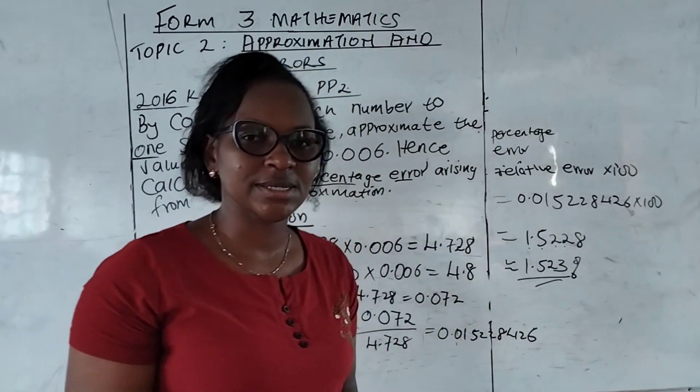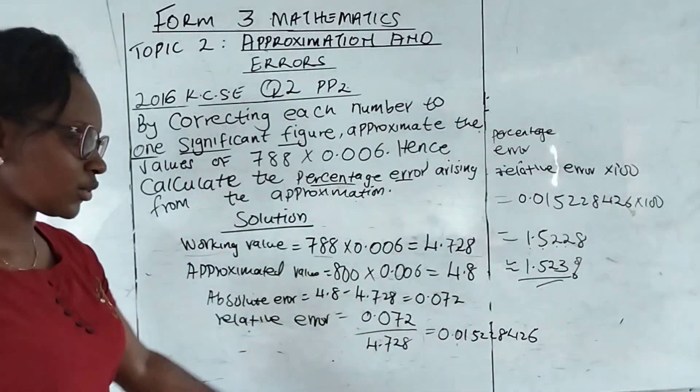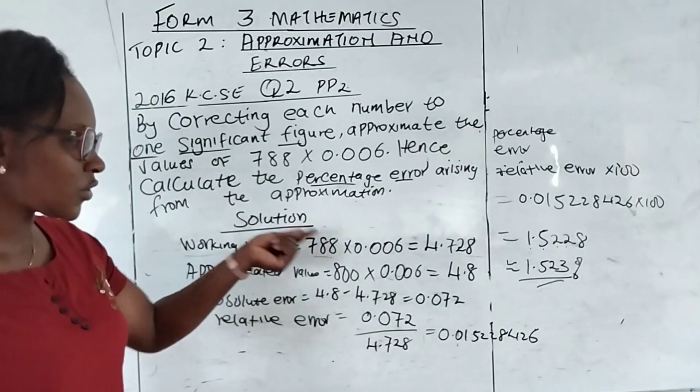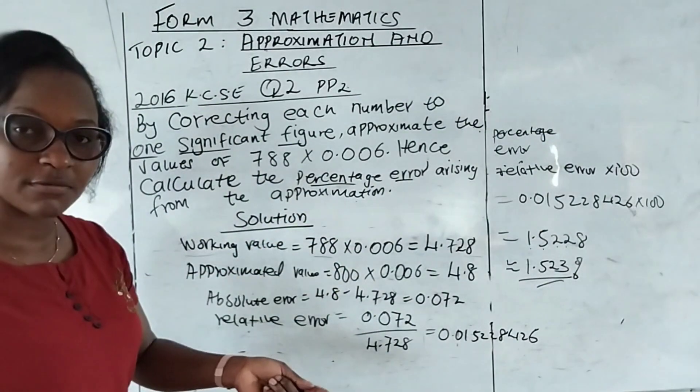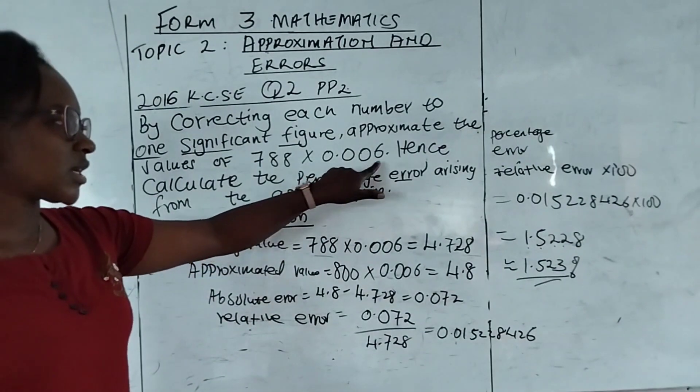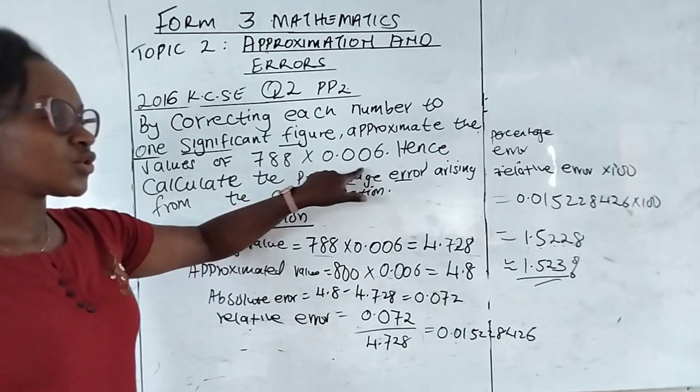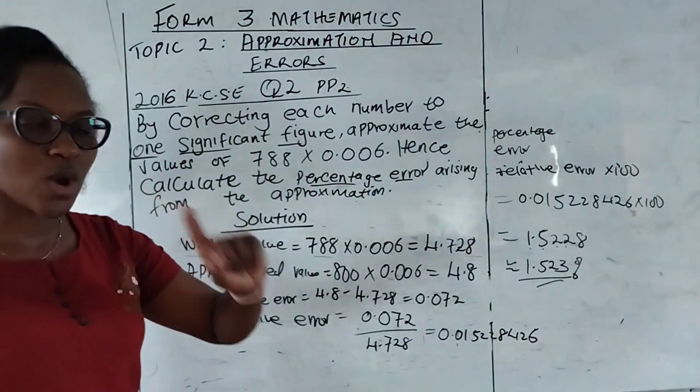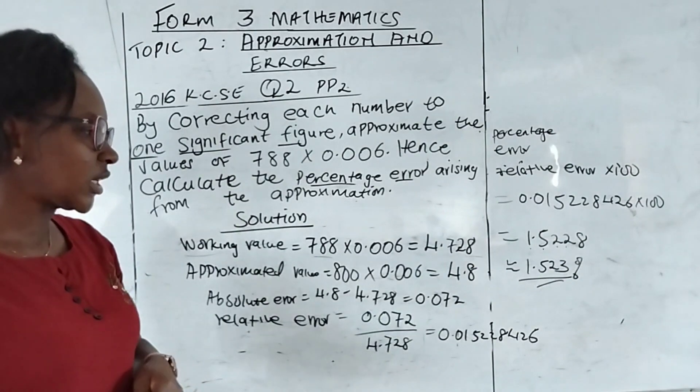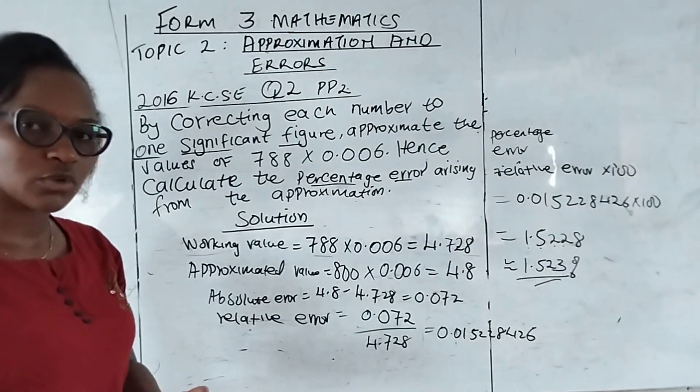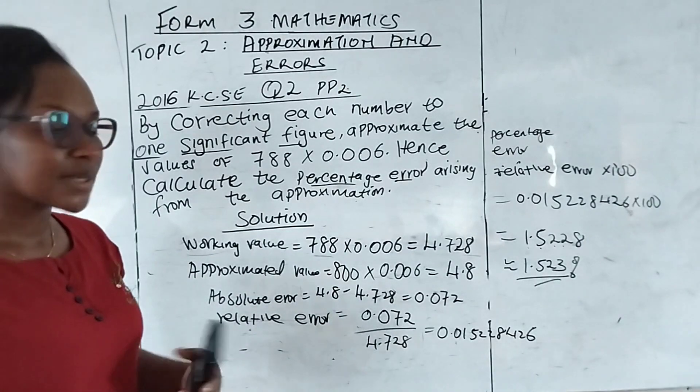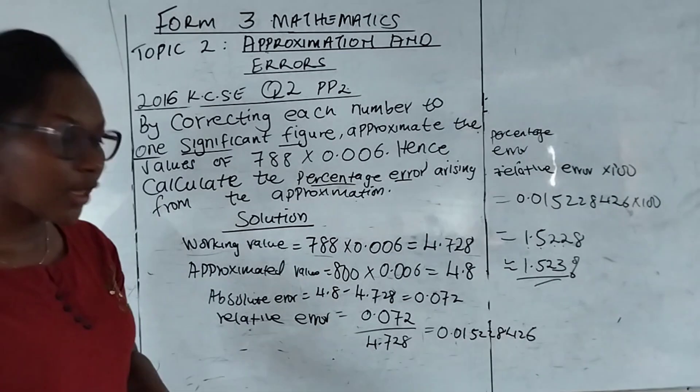I hope you have followed how to get this kind of example that we have. I know the most confusing part maybe for most students was how to convert 0.006 to 1 significant figure. But I hope now it is very clear with you. Stay tuned, don't forget to like, leave a comment down there and subscribe for more. Thank you very much.